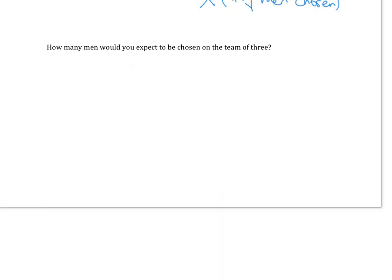For the second part of this problem, we're asked how many men would you expect to be chosen on the team of 3. So we're looking for our expected value. And again, that's R times A over N. And that's just 3 times 8 over 15 total people or options. And that gives you 1.6.